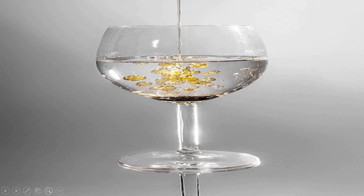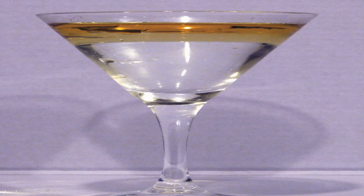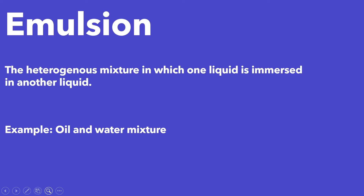Now look at this image. Here we are taking water and adding oil in it. After some time, we can see that the layer of oil is above the water. Since the density of oil is less than the density of water, it floats on water. Here also we are seeing two separate phases, so it is a heterogeneous mixture. And since one liquid is immersed in another liquid, it is a kind of emulsion heterogeneous mixture.